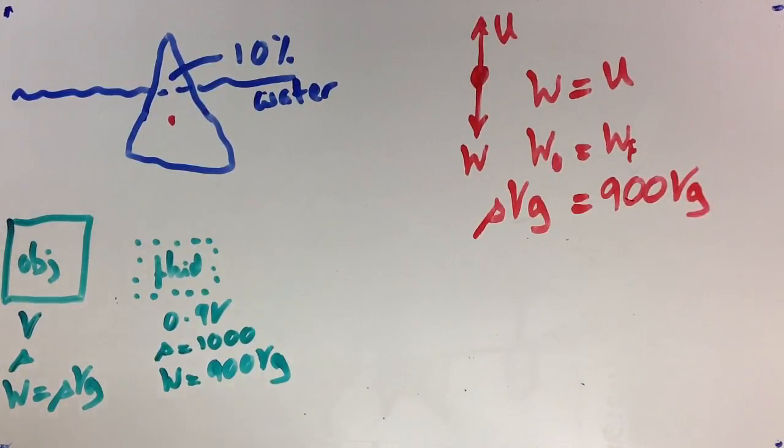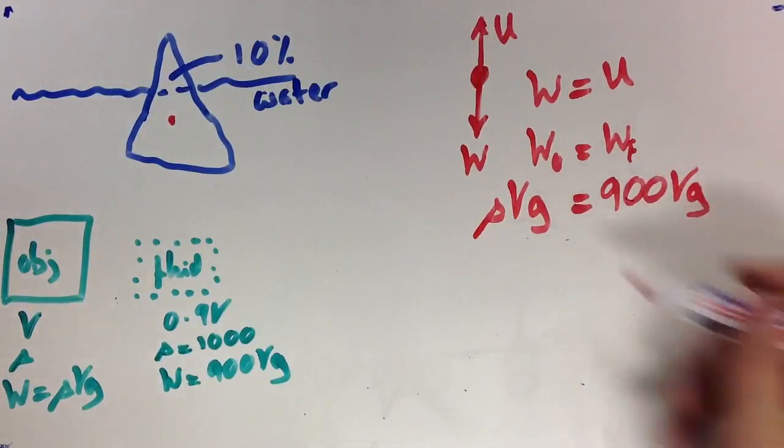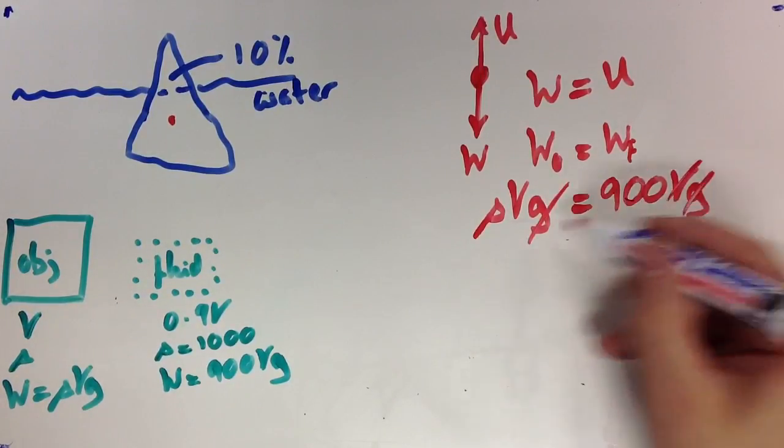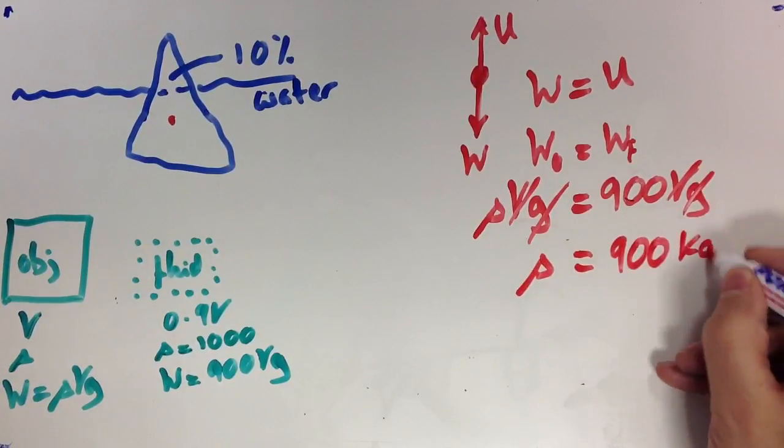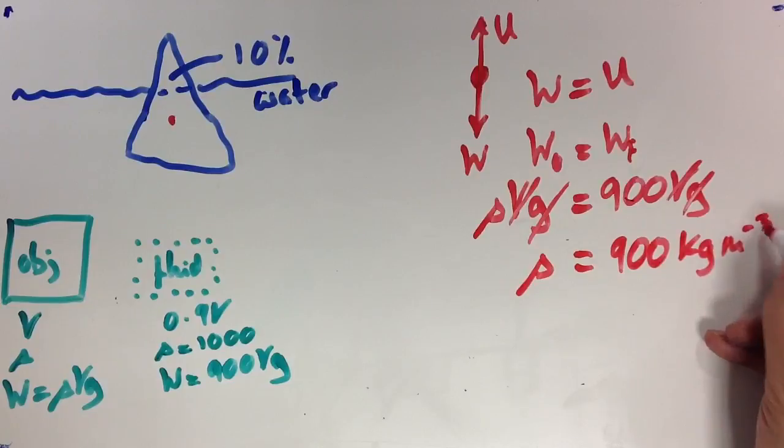Okay, now it becomes a nice, easy mathematical puzzle. Divide both sides by G. The G's cancel out. Divide both sides by V. V's cancel out. And the density of our object is 900 kg per metre cubed.